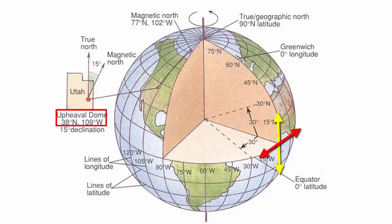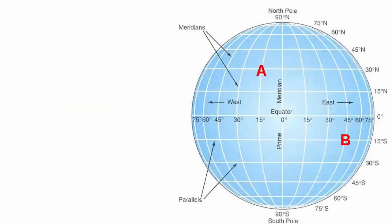Thus, upheaval dome is located at 38 degrees north of the equator and 109 degrees west of the prime meridian. Now, pause the video and test your understanding by accurately locating points A and B as shown in this image.